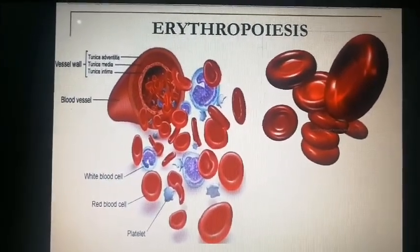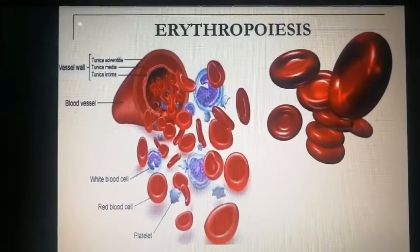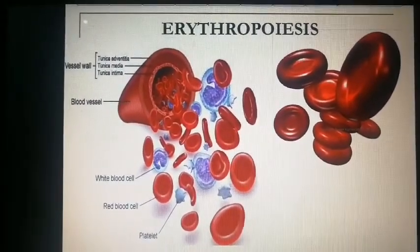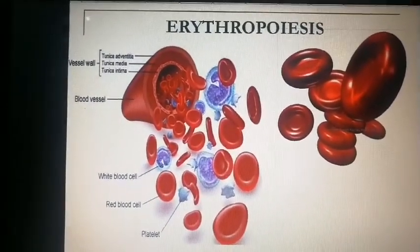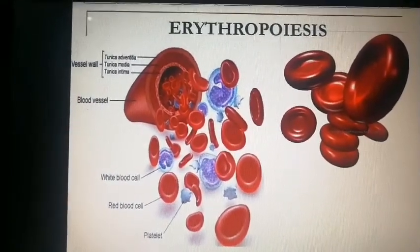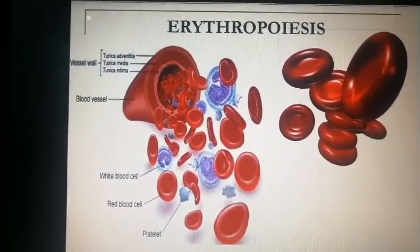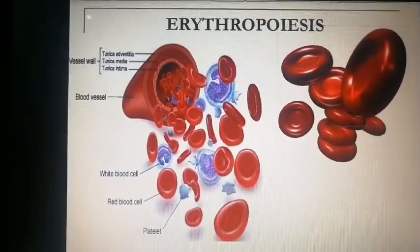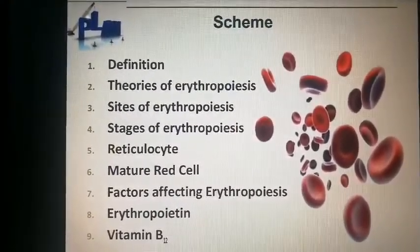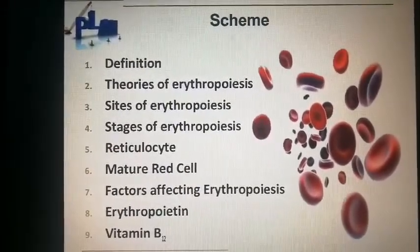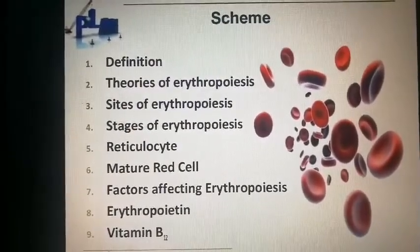Today our topic of discussion is erythropoiesis. You can see here the blood vessel having tunica adventitia, tunica media, and tunica intima, and white blood cells, red blood cells, and platelets. We will cover the definition of erythropoiesis, site of erythropoiesis, stages of erythropoiesis, reticulocyte, mature red blood cells, factors affecting erythropoiesis, erythropoietin, and the role of vitamin B12 in erythropoiesis.